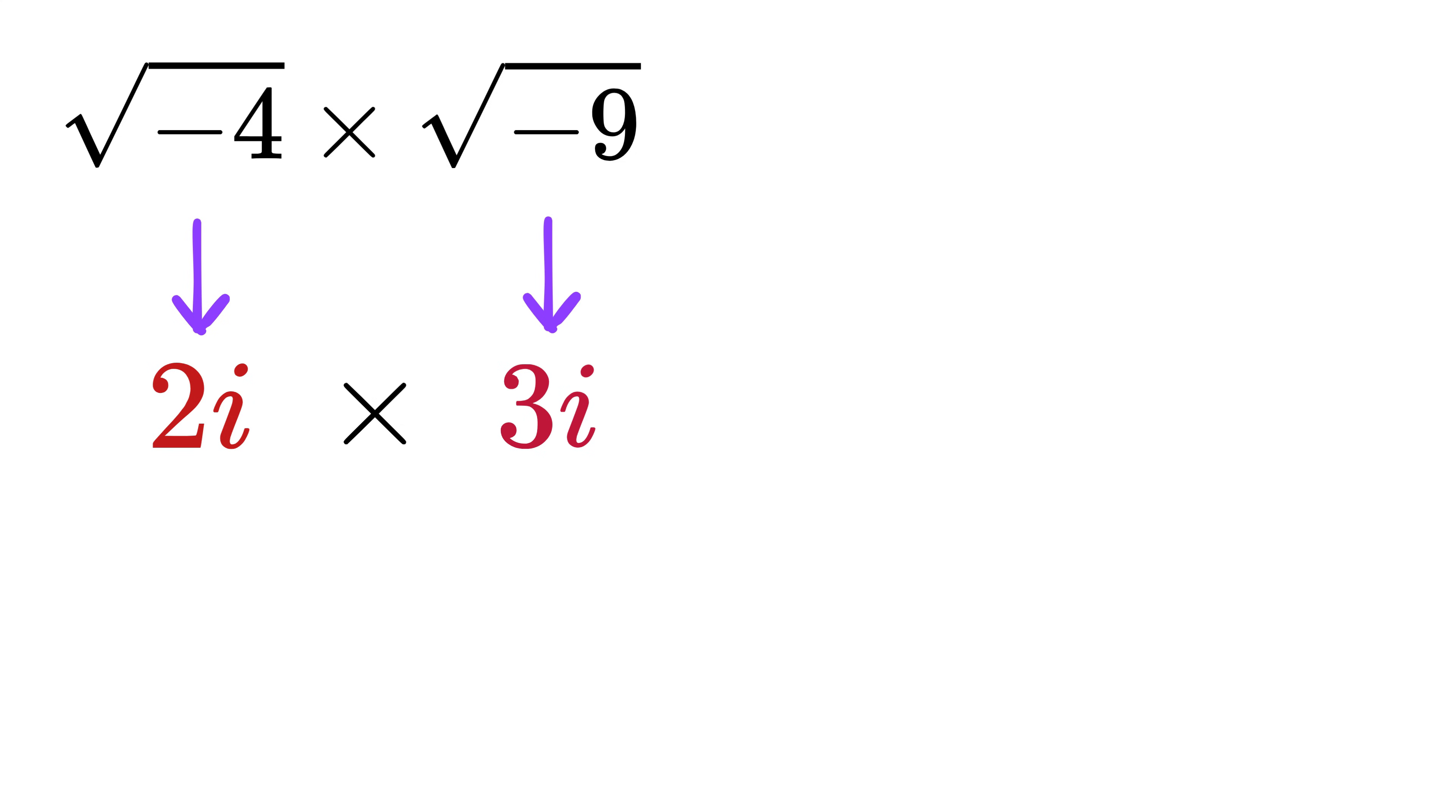Now we multiply these results together. 2i multiplied by 3i gives 6 times i squared. But, as mentioned, i squared equals minus 1. And thus this gives 6 times minus 1, which is minus 6. So the final correct answer is minus 6.